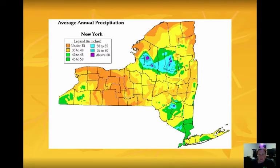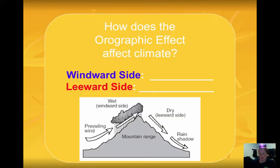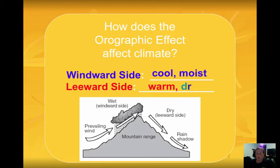Some examples of the orographic effect: here in New York State, we have the Adirondack Mountains and the Catskills. There are varying amounts of precipitation based on where the wind is coming from, and the leeward sides of the Adirondacks and Catskills receive much less precipitation. The windward side is cooler and moister — that's where precipitation occurs — and the leeward side is warmer and drier, the desert side of the mountain range.